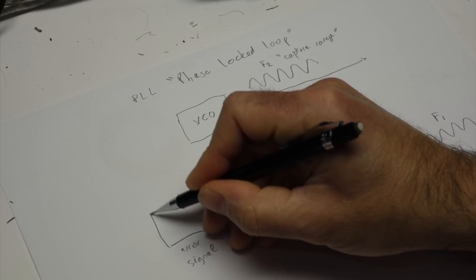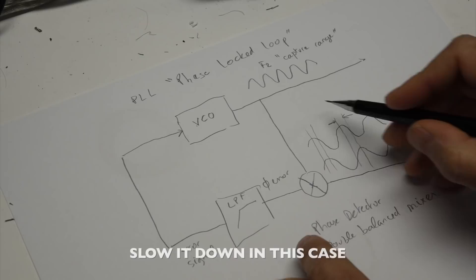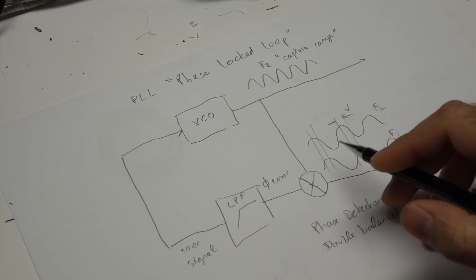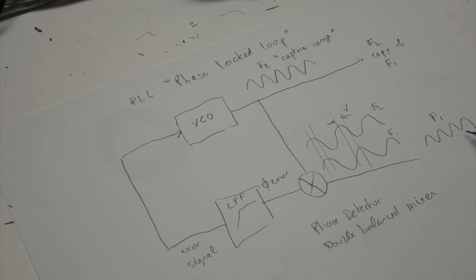And you feed it back as the VCO, the voltage control input for your VCO. And what it's going to do, it's going to quicken up your F2 until it matches F1 exactly, and this difference is zero. And then you get F2 copy of F1. So you've controlled F2 by F1.